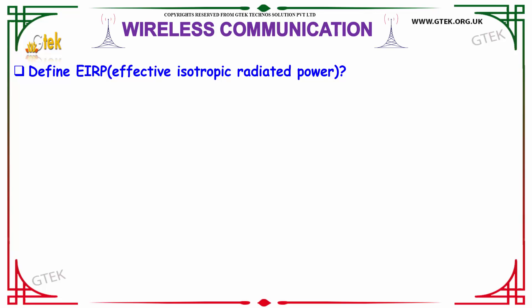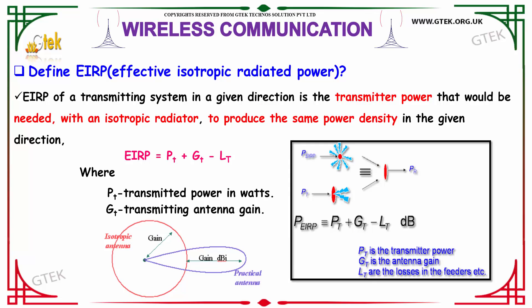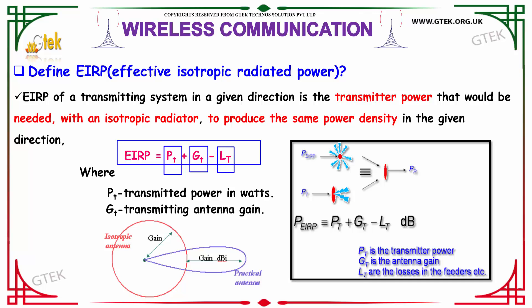Define EIRP. EIRP is abbreviated as Effective Isotropic Radiated Power. The EIRP of a transmitting system in a given direction is the transmitted power that would be needed within an isotropic radiator in order to produce the same power density in a given direction. The formula for EIRP is: EIRP = Pt + Gt − Lt, where Pt is the transmitter power in watts, Gt is the antenna gain, and Lt is the loss in the feeders.